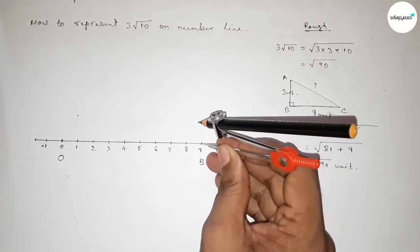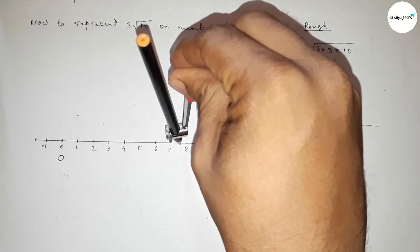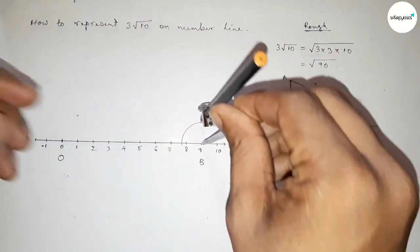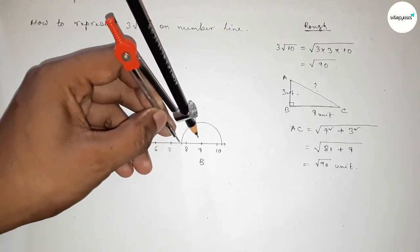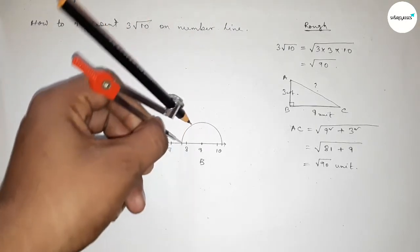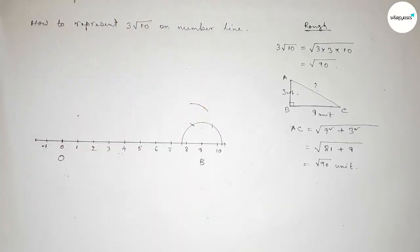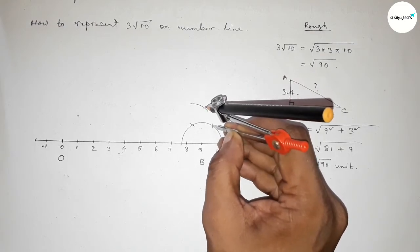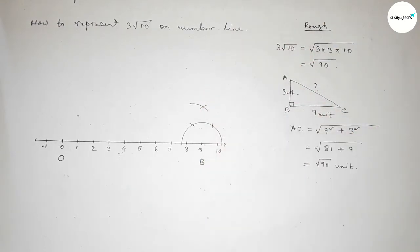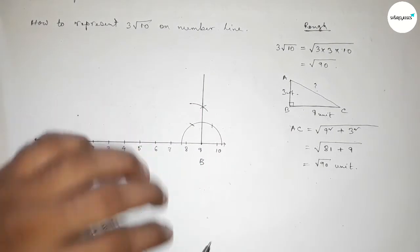Now first we have to draw a 90 degree angle on the point B. So putting the compass and taking any length and drawing an arc by this way. Same length, putting the compass and cutting the compass here and cut here and drawing an arc here again. With same length, putting the compass here and cut here. So both the curves intersect at a point.